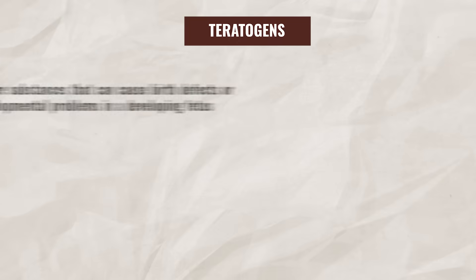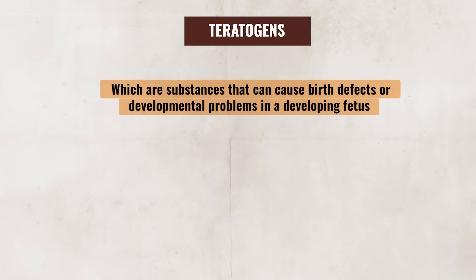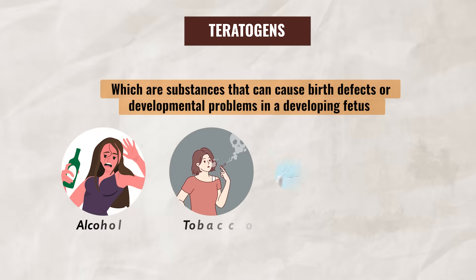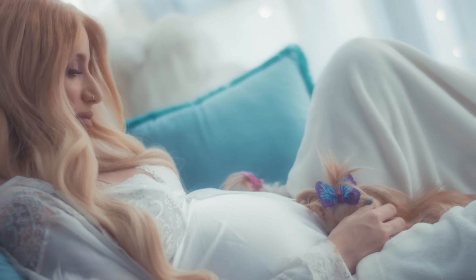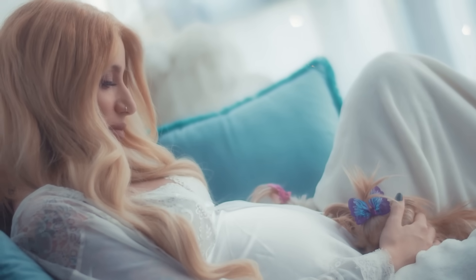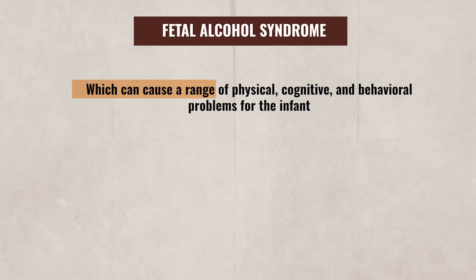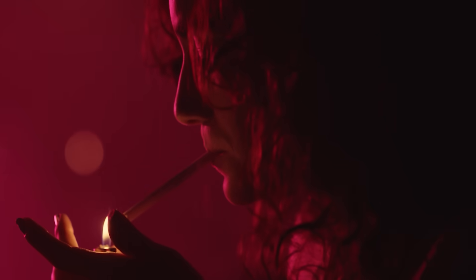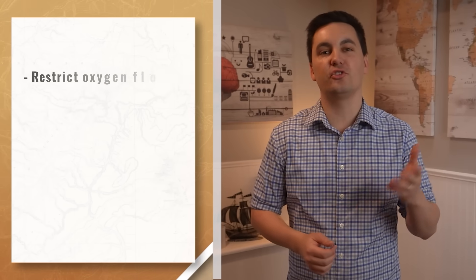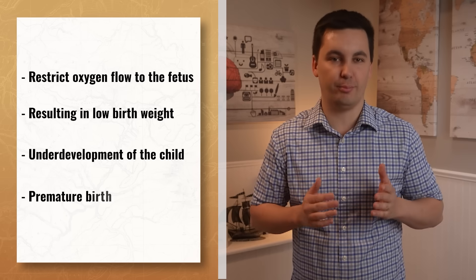The first factor is teratogens, which are substances that can cause birth defects or developmental problems in a developing fetus. Common teratogens are alcohol, tobacco, drugs, and other environmental toxins. It is important that the mother avoids teratogens during pregnancy since they can cause birth defects. For instance, if the mother consumes alcohol while pregnant, it could lead to fetal alcohol syndrome, which can cause a range of physical, cognitive, and behavioral problems for the infant. Or if the mother smokes during pregnancy, it could restrict oxygen flow to the fetus, resulting in a low birth rate, possible underdevelopment of the child, and a premature birth.